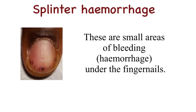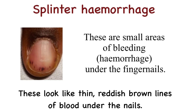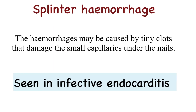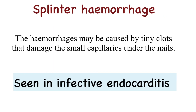Splinter hemorrhages are small areas of bleeding under the fingernails. These look like thin reddish-brown lines of blood under the nails. The hemorrhages may be caused by tiny clots that damage the small capillaries under the nails.